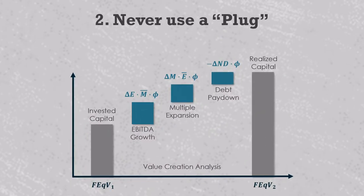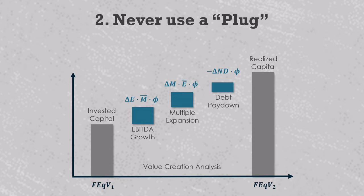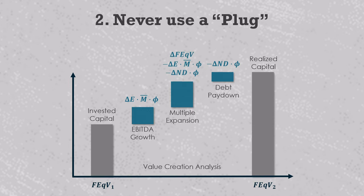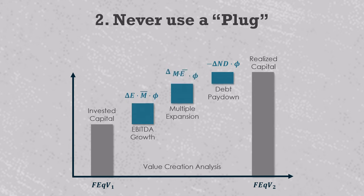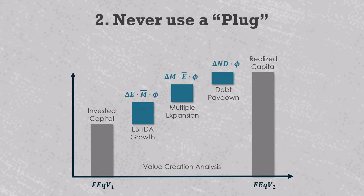The second rule is that we should always calculate every value driver directly and never use a plug. Sometimes value drivers don't add up to the right total — they don't bridge the gap between invested equity and realized equity and there's an error. A common way of fixing this is basically ignoring the problem: calculate two of the value drivers and let the third make up the difference, so multiple expansion equals value creation less EBITDA growth less debt pay down, and miraculously the drivers add up. This is what we call a plug, and it's a terrible practice because any errors in the analysis will always accumulate there. They inject volatility into the results and often prevent meaningful comparisons between different models or even two different companies analyzed with the same model. Instead, we will always calculate every value driver directly, and if the numbers don't add up, we'll figure out what's going on and fix the problem.